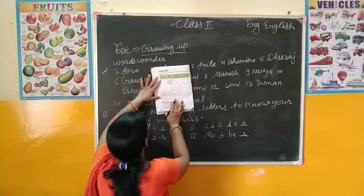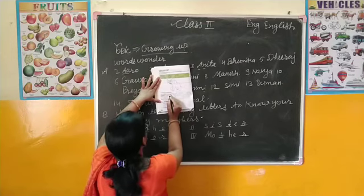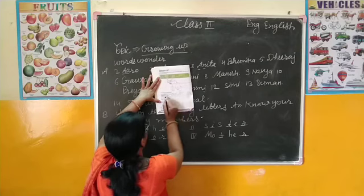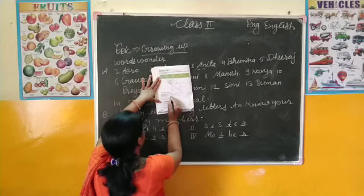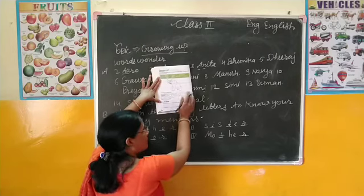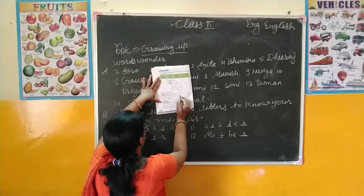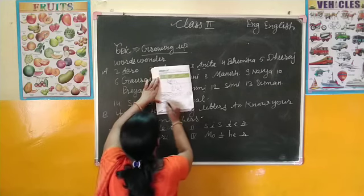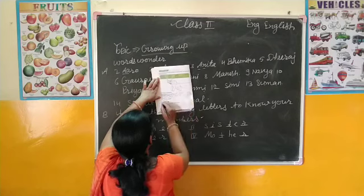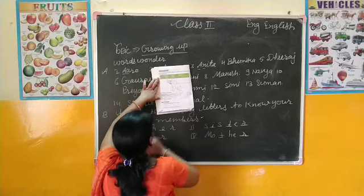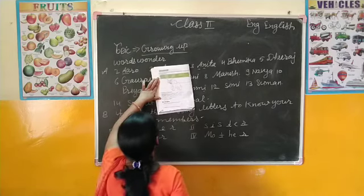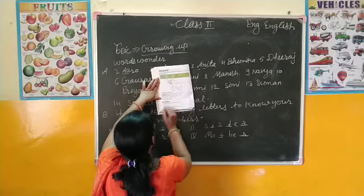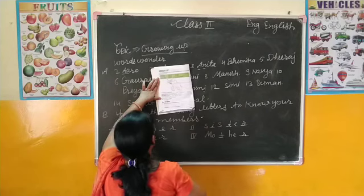Listen again students. First: 'It loves bananas, sugar cane and leaves' - यह केले, गन्ने, और पत्तियाँ पसंद करता है खाना। 'It has two eyes and two large ears' - इसके दो आँखें और दो कान हैं। 'It has four legs' और 'It has a short tail' - इसके चार पैर और एक छोटी पूँछ है। 'It has two white tusks' - इसके दो सफेद दाँत होते हैं। 'It has a long trunk also' - इसके एक बड़ा सूंड भी होता है।